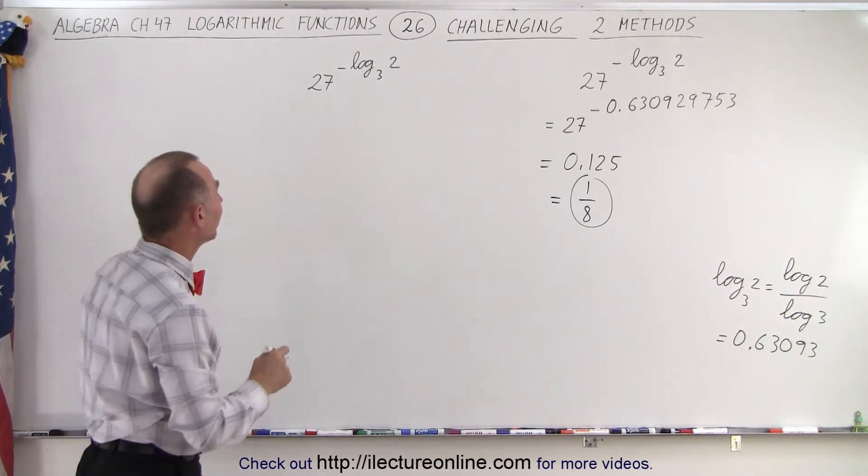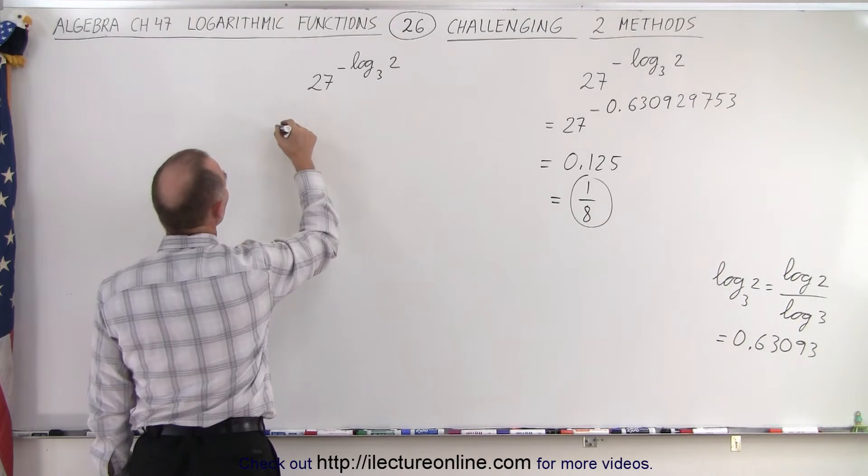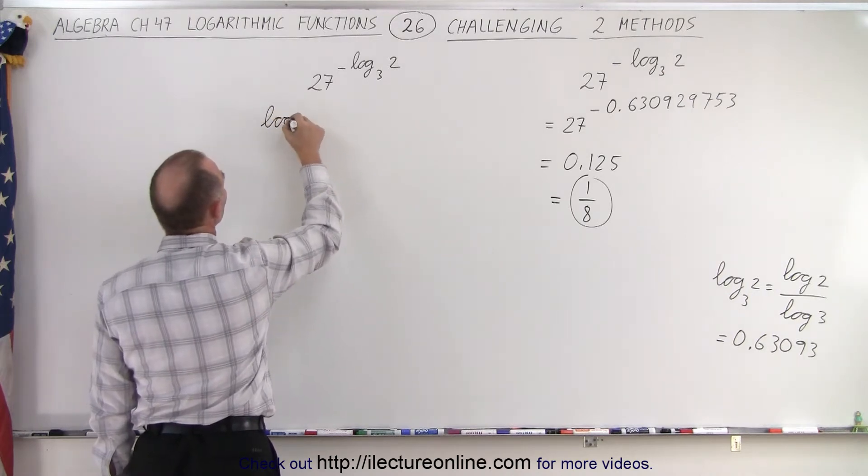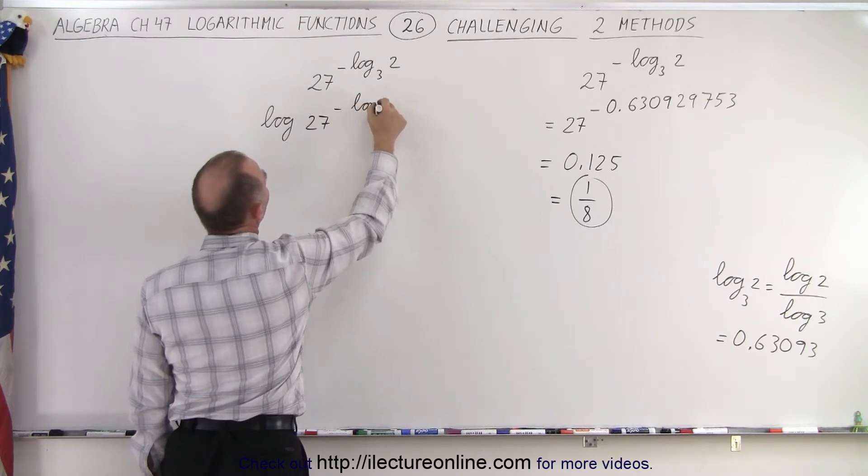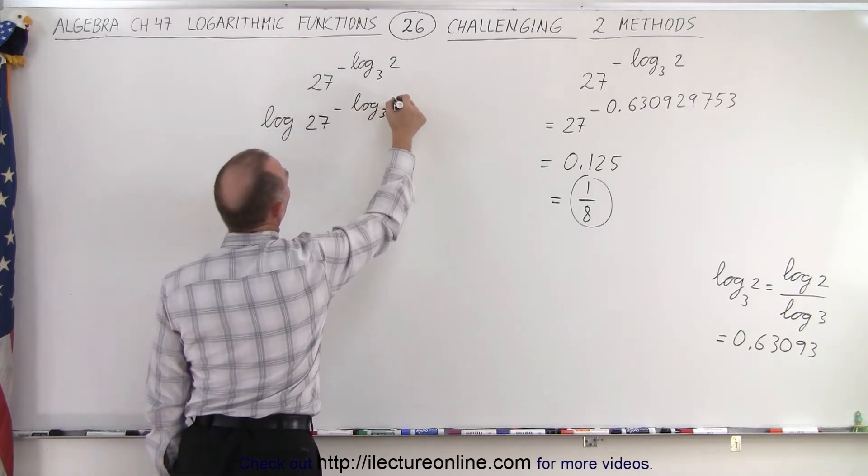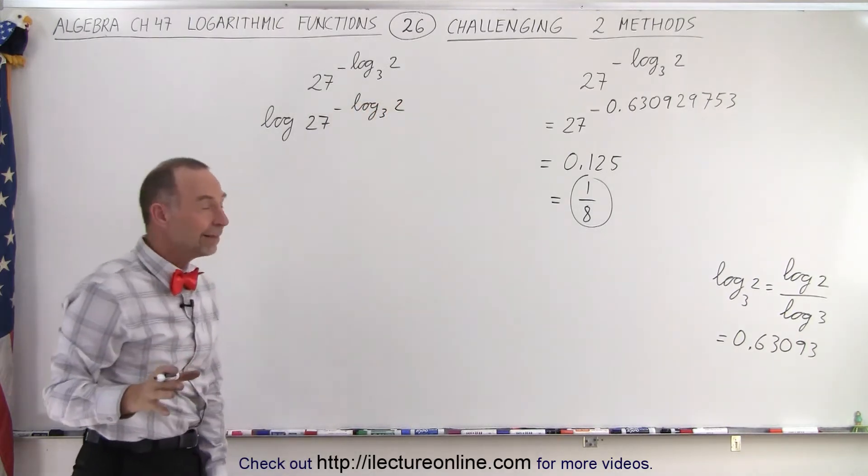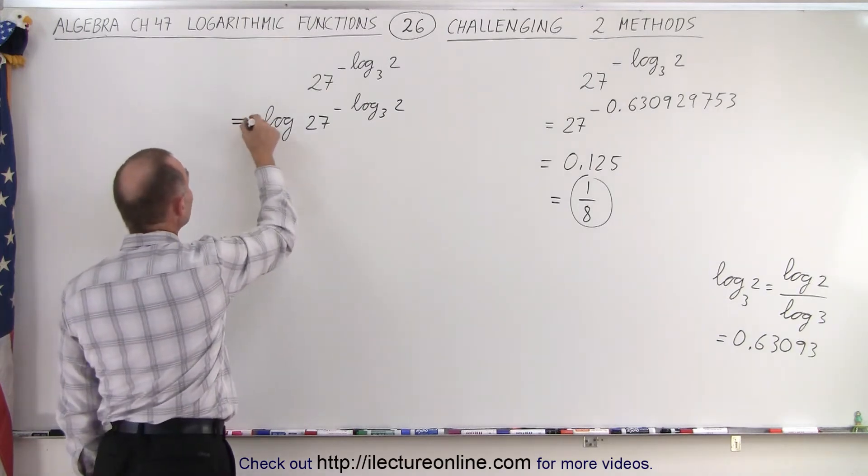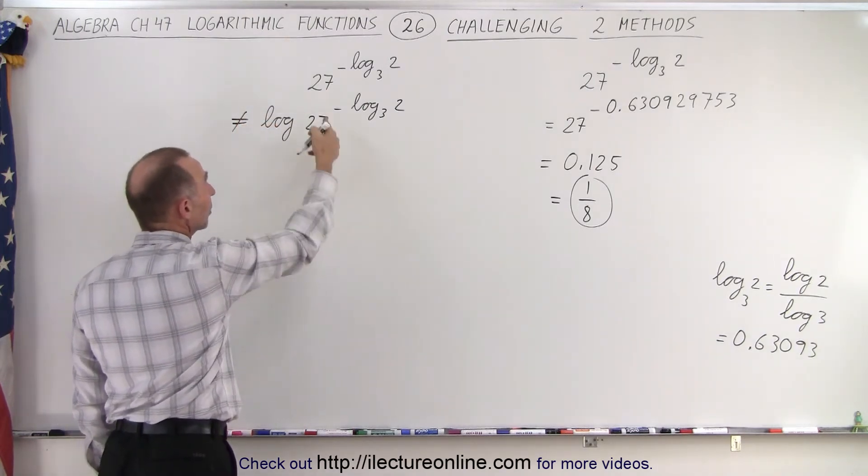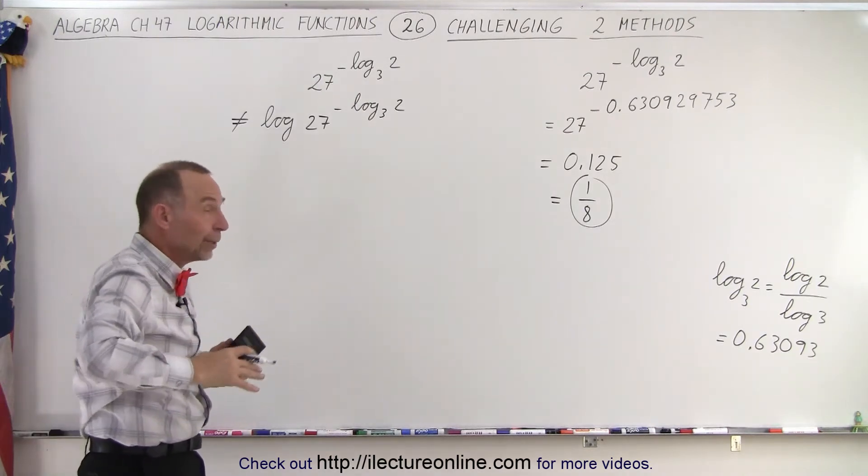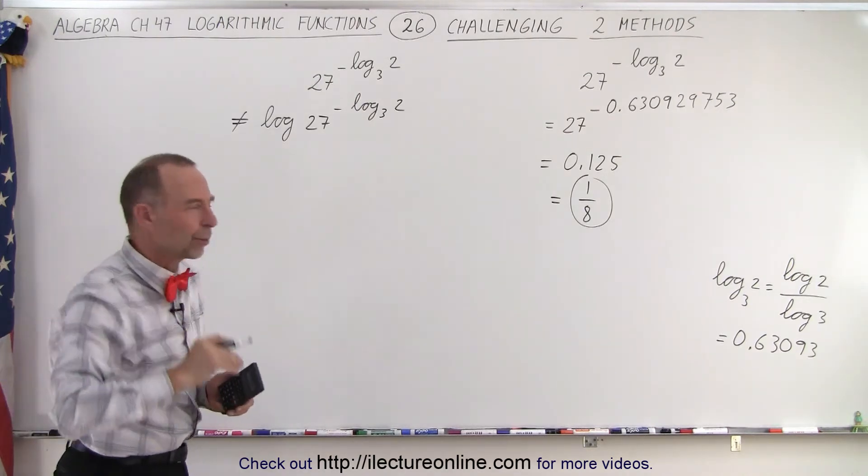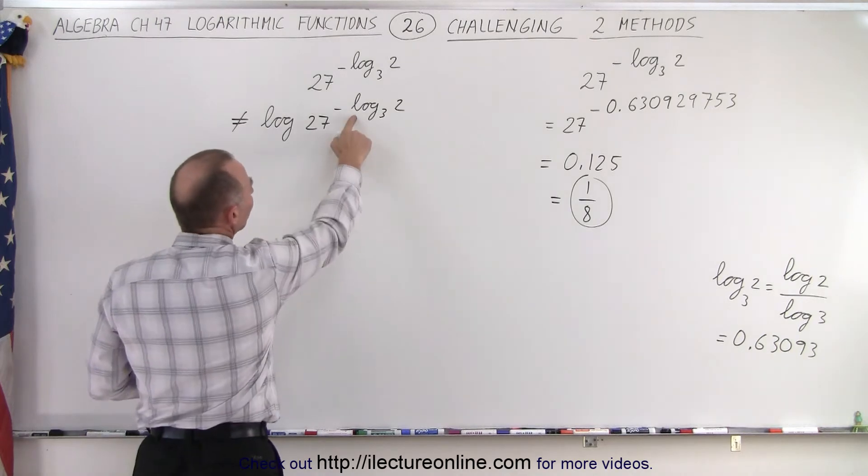Well, what we could do is we can take the log of that. So let's take the log of 27 raised to the minus log base 3 of 2. And I say, well, wait a minute. If, so that is not equal to that, because when you take the log of something, you change it. But then if we take the anti-log later, we get back to what we started with. So that's what we're going to do.